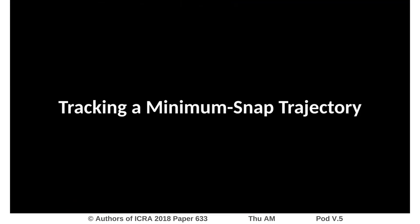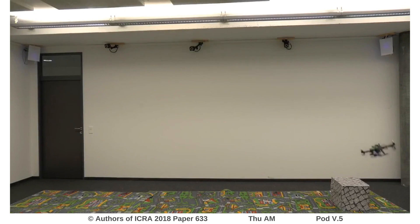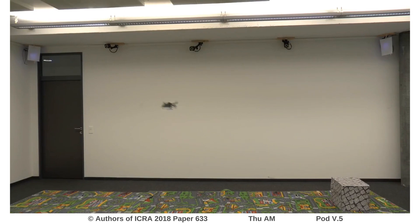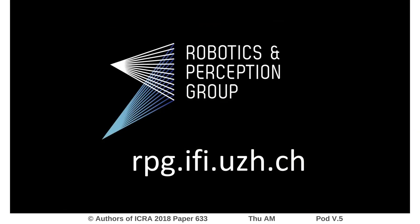In the second experiment, we fly a minimum snap trajectory using the exact same controller and costs. We follow the trajectory by setting our reference state according to the closest state on the trajectory by the Euclidean norm. We could successfully prove the functionality of our state-dependent LQR in various quadrotor maneuvers and demonstrate its performance and robustness.